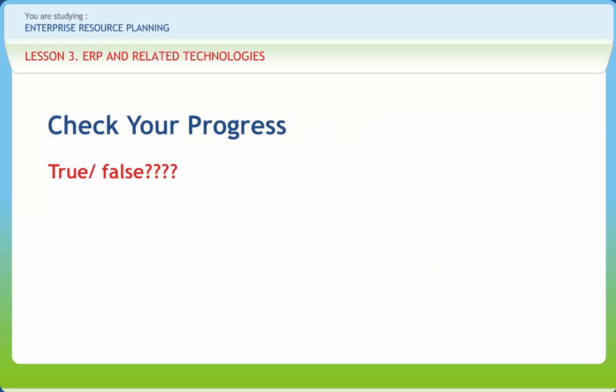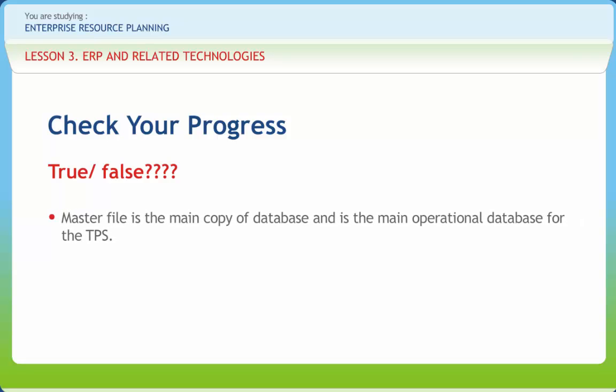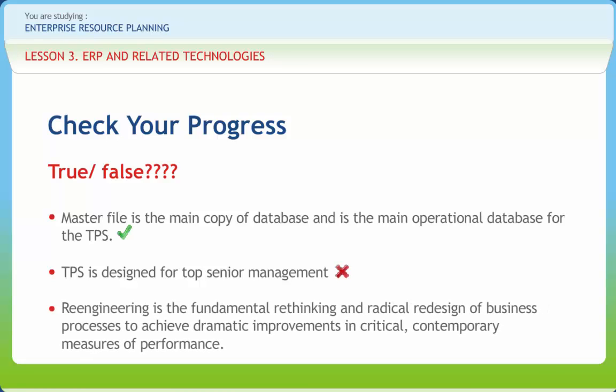Let us check if we have understood the various concepts discussed in this lesson. Master file is the main copy of database and is the main operational database for the TPS — Right or Wrong? Right. TPS is designed for top senior management — Right or Wrong? Wrong. Re-engineering is the fundamental rethinking and radical redesign of business processes to achieve dramatic improvements in critical contemporary measures of performance — Right or Wrong? Right.